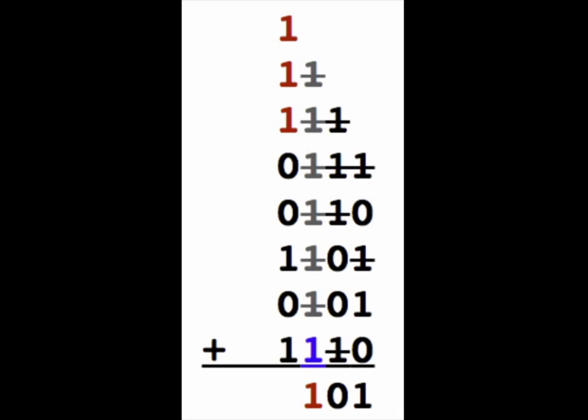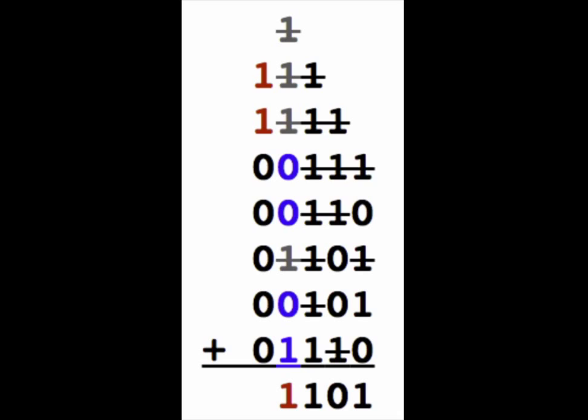Adding the fourth column generates 2 carries. Since there is no fifth column, we will create one with all 0s and mark the carries above it. Next we write the unpaired 1 below the fourth column.